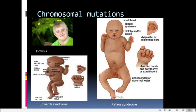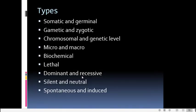Micro mutations produce small, unnoticeable, or inconspicuous phenotypic effects — changes that may not be easily distinguishable from normal characteristics. Macro mutations, by contrast, produce strikingly evident phenotypic changes. The classification into micro and macro depends upon the magnitude of phenotypic effect produced.